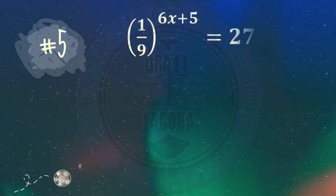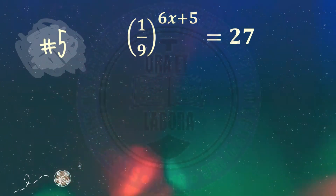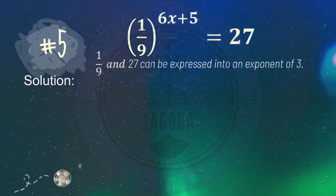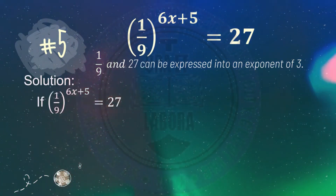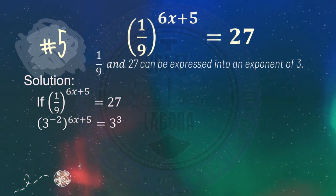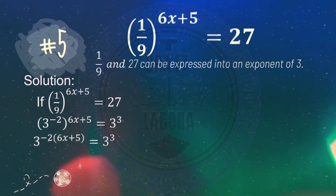Number 5: 1 over 9 raised to 6x plus 5 equals 27. Both 1 over 9 and 27 can be expressed as a power of 3. So we need to express 1 over 9 and 27 with a base of 3.